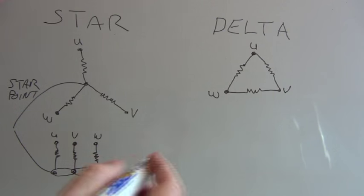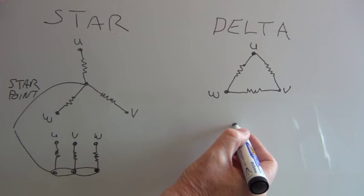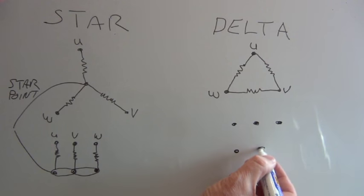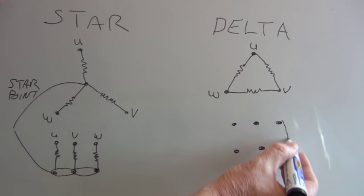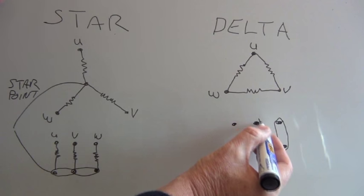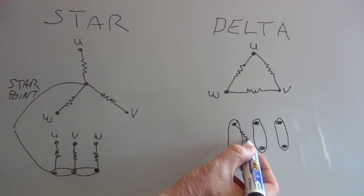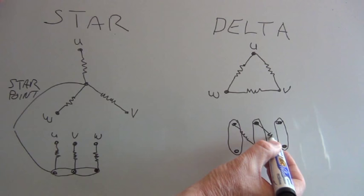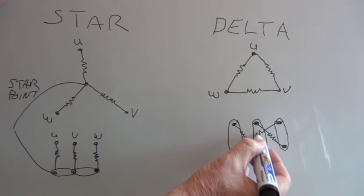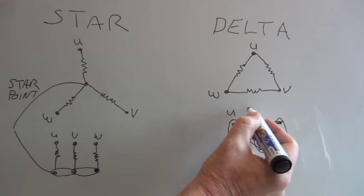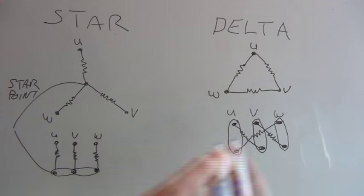If we look in a terminal block of the motor for the delta connection, we have this configuration where we have the six terminals, but this time the links go across the terminals like so, and the internal windings are connected in this configuration inside the motor. So we have U, V, and W, and that gives us the delta connection.